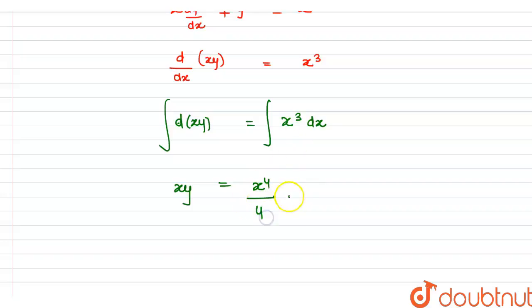Now we can simplify this: 4xy = x⁴ + 4C.